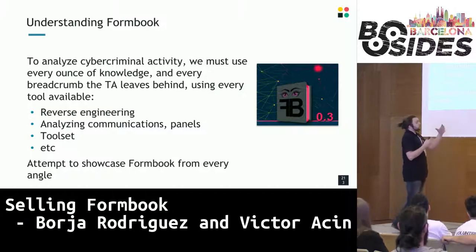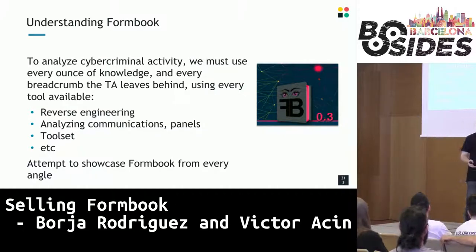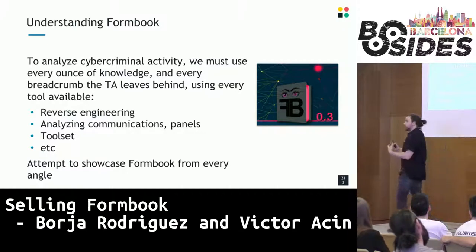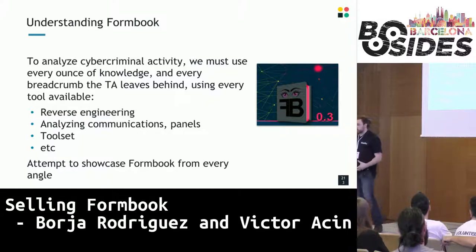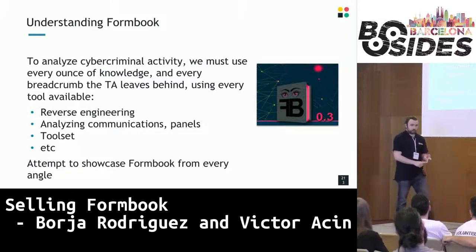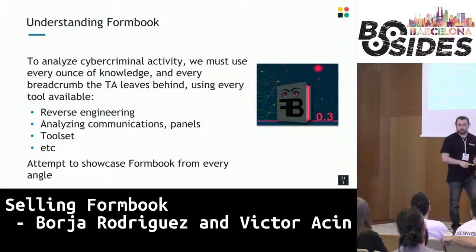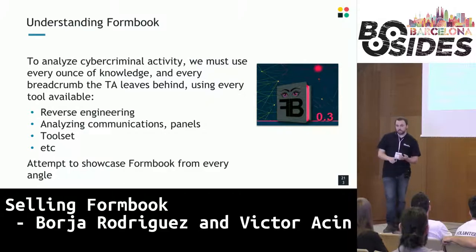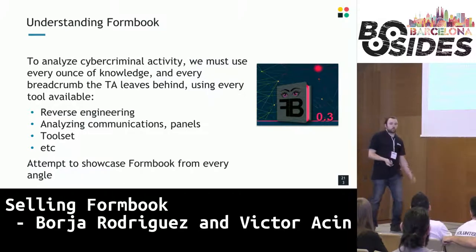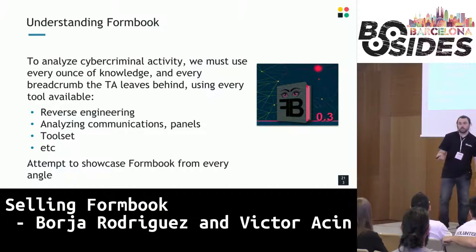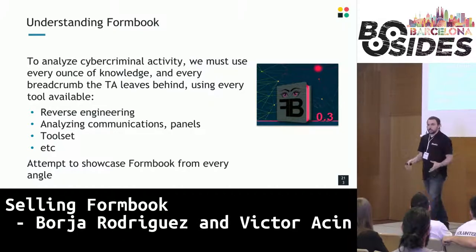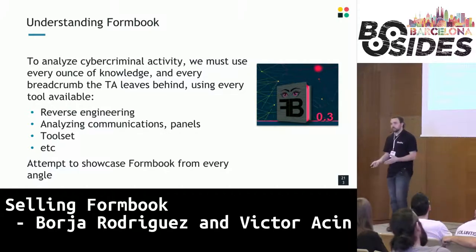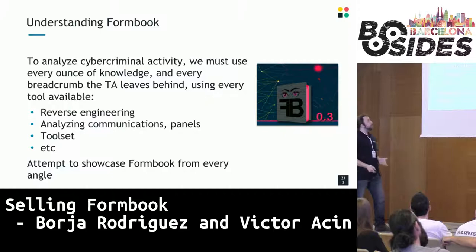In order to understand how Formbook works and how people are using it, we need to analyze every piece of knowledge we get. From a research point of view, those pieces include command and control servers, samples, emails used for distribution, communications, keys they use — all of that is what we call indicators of compromise or indicators of actor. This information can identify a single actor among a group or a targeted attack just based on that data, and it's what we will try to showcase today.